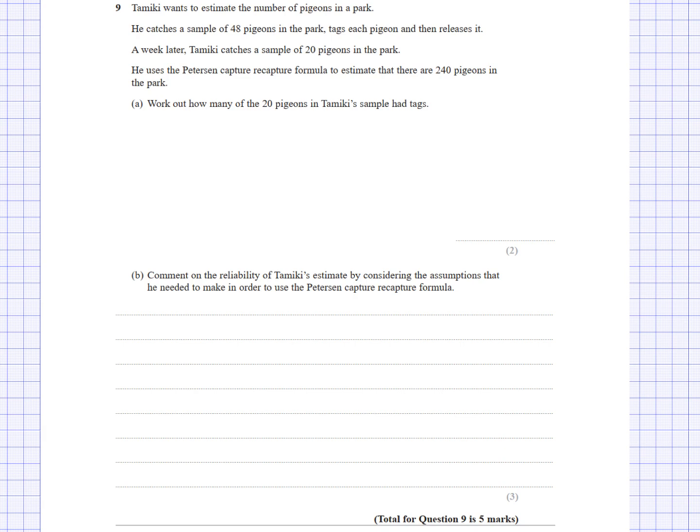Tamiki first caught 48, so that 48 is going to be here. Tamiki's estimate was 240 pigeons, so that's there. A week later, Tamiki had caught 20 pigeons, and we need to find how many are tagged. This is often represented by lowercase m. To find this, I simply need to multiply this 20 and get my m. So 48 times 20 over 240 is equal to m. Put that in your calculator. You will find that gives you 4.